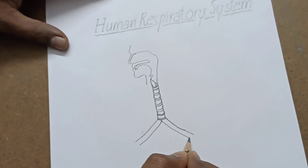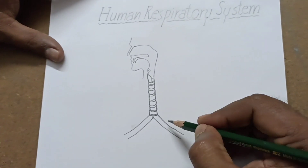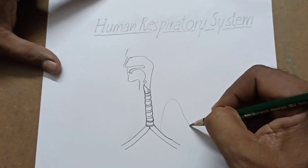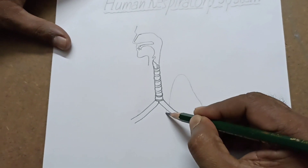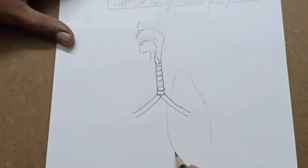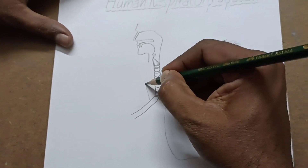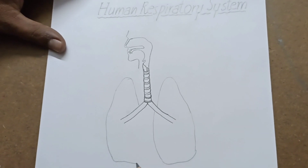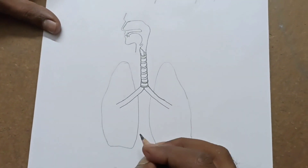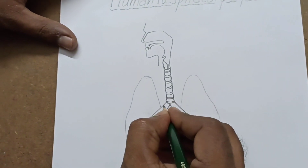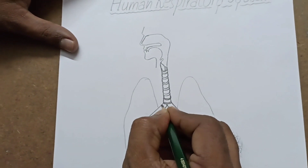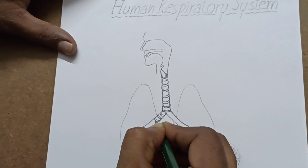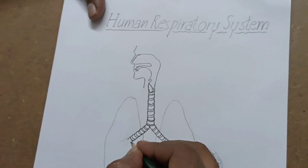These are bronchi. Now we have to draw light outline lines of the lungs like this — outlines for two lungs. Now we have to draw C-shaped rings here in the bronchi.